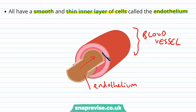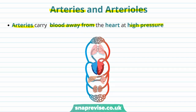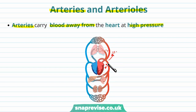Once blood has been pumped away from the heart it first enters arteries, which then become smaller as arterioles. Arteries carry blood away from the heart — always in an away direction — and do so at high pressure. The reason it's at high pressure is because the heart has just squeezed itself to push the blood out, so the blood here is at its highest pressure point, having literally just arrived into the vessels.